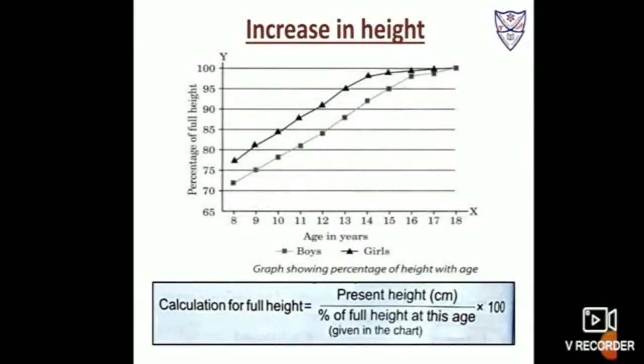Let us understand this through the graph. At the age of eight, boys complete 72% of their height, whereas girls complete 77%. At the age of nine, boys complete 75%, whereas girls complete 81% of their height. But at the age of 18, both reach their maximum height, that is 100%.